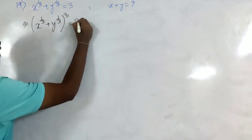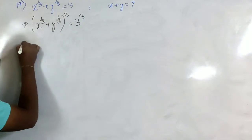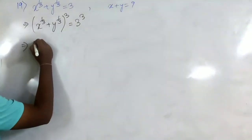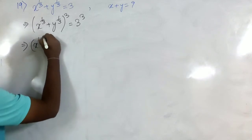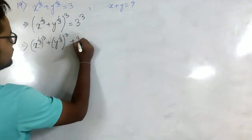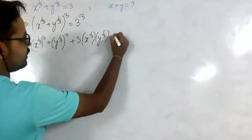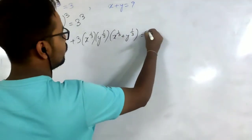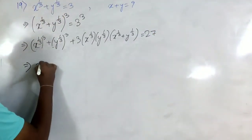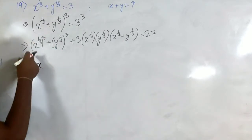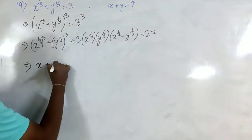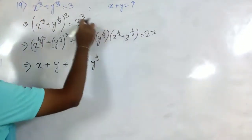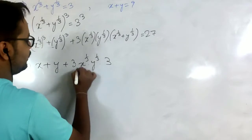We do cubing of both sides: (x^(1/3) + y^(1/3))³ = 3³. Applying the formula (a + b)³ = a³ + b³ + 3ab(a + b), we get x + y + 3·(x^(1/3))·(y^(1/3))·(x^(1/3) + y^(1/3)) = 27. The value of x^(1/3) + y^(1/3) is 3, so we substitute that in, giving x + y + 3·(x^(1/3))·(y^(1/3))·3 = 27.